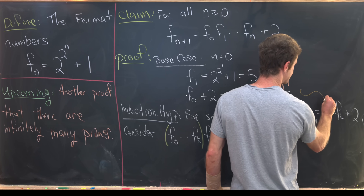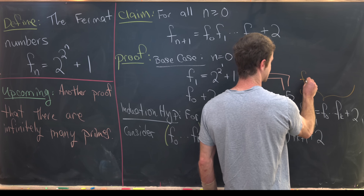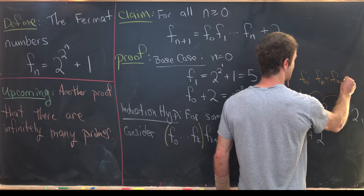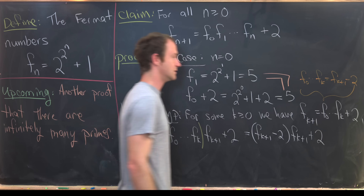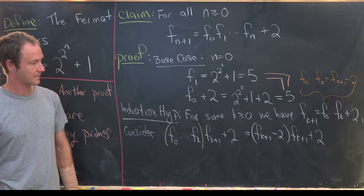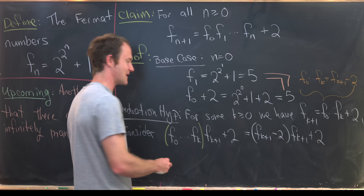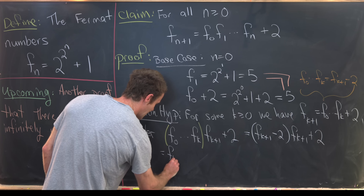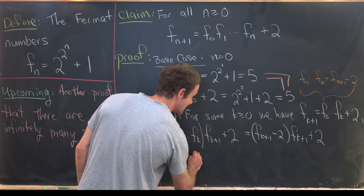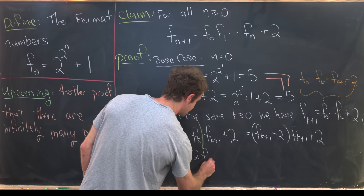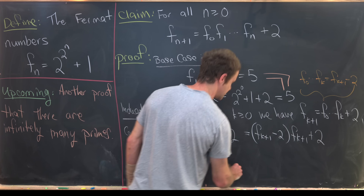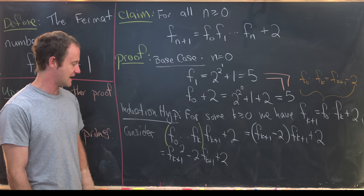To clarify: inverting the induction hypothesis equation, the product F0 up to Fk equals F sub k plus 1 minus 2 — that's the useful form highlighted in the yellow parentheses. This leaves us with F sub k plus 1 squared, minus 2 times F sub k plus 1, plus 2.